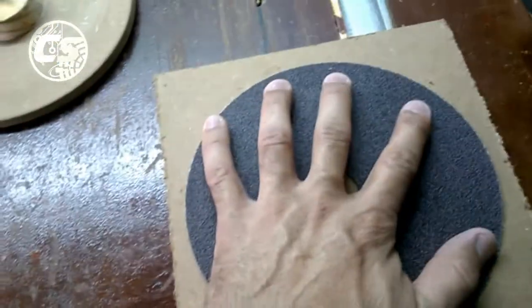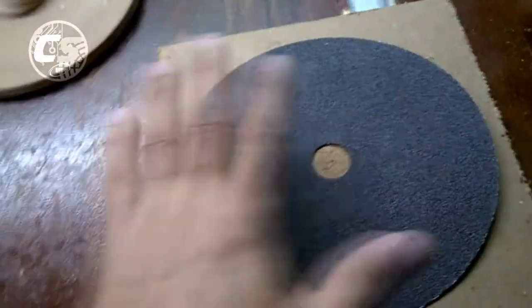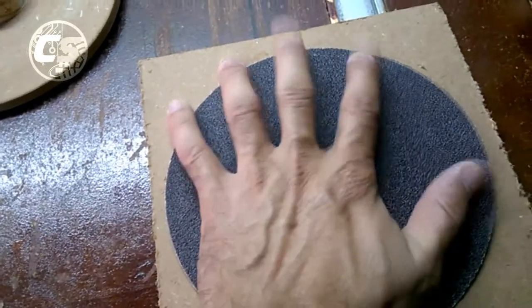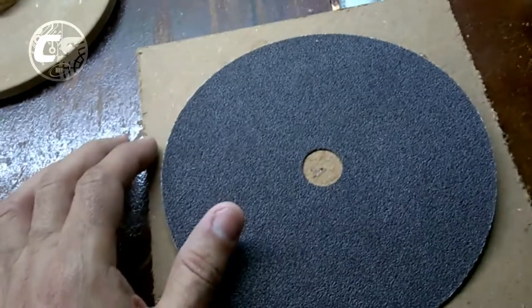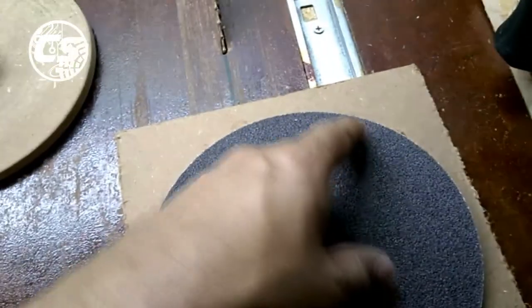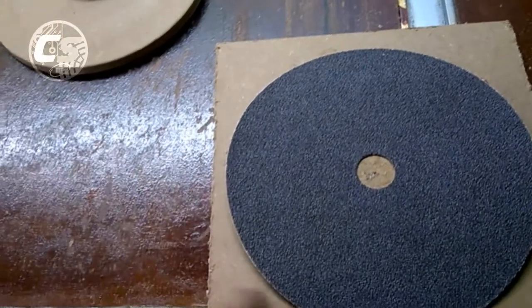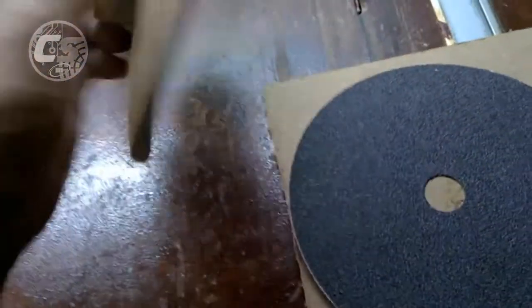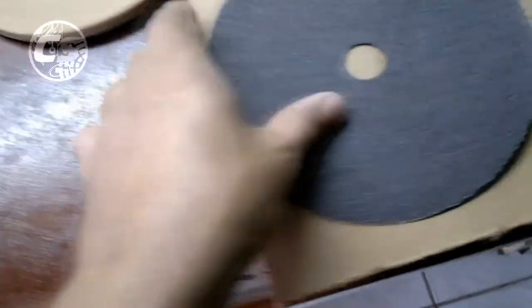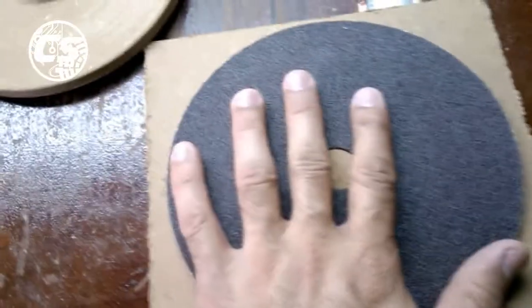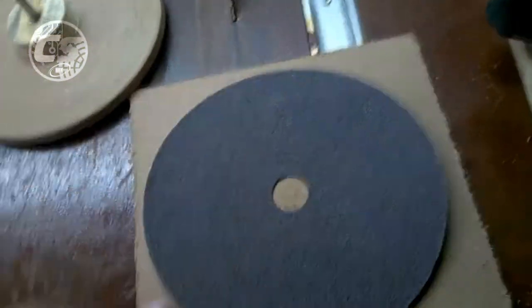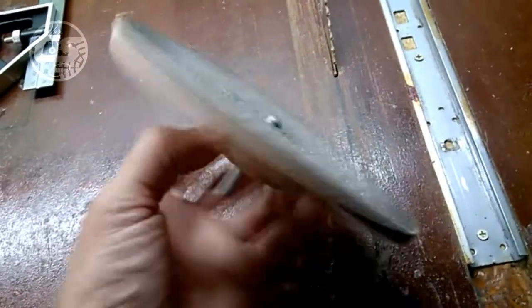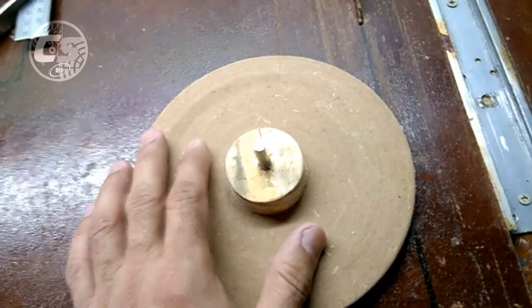You'll use contact cement or shoe glue and glue the sandpaper onto the MDF. Wait for it to dry. Once done, take a jigsaw and cut all around the sandpaper, leaving just the circle. Don't worry if it's uneven to one side or the other, because later I'll show you how to fix this. Once you've glued the sandpaper and cut the MDF, you'll have a disc like this with the sandpaper glued to the MDF in a circle.